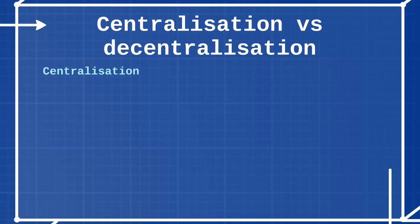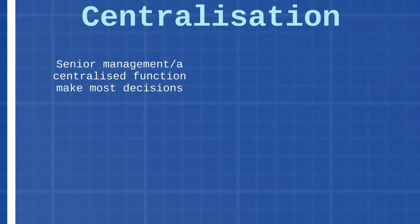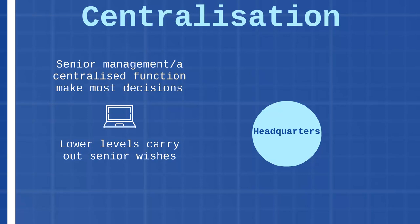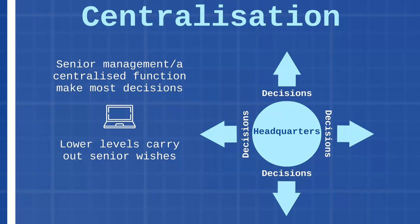This is a topic with two titles. Centralization is simply when an organization's decisions are made by senior management or a centralized function, rather than letting its divisional or lower level managers make the decisions. For example, if an organization's IT decision making was centralized, a single IT function would make all of the IT decisions for the entire organization, and divisional and lower level managers would only carry out the wishes of the centralized function. In pictorial form, decisions flow from headquarters out to the divisions, rather than being made at the divisions themselves.